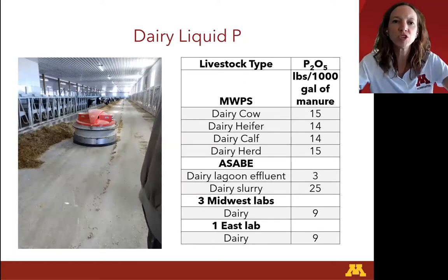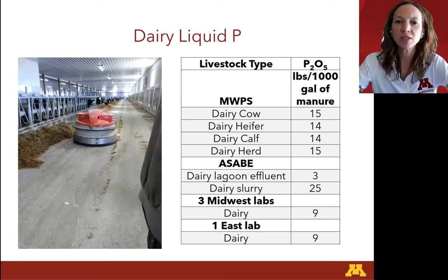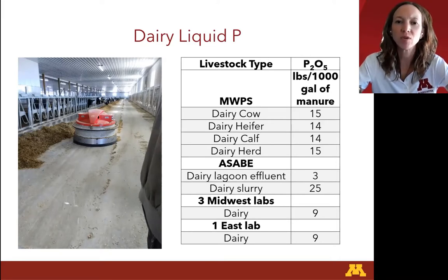For dairy liquid phosphorus, Midwest Plant Service ranged between 14 and 15 pounds per thousand gallons, and both of our lab numbers came in at 9 — trending lower across the board, besides the separated dairy lagoon effluent number from ASABE.